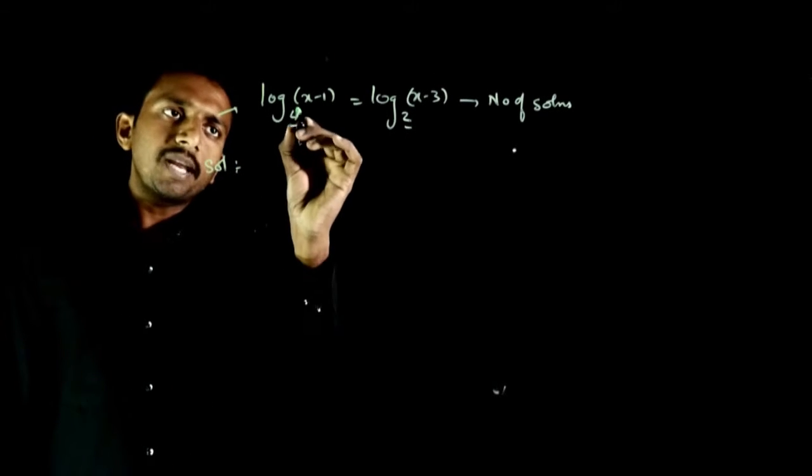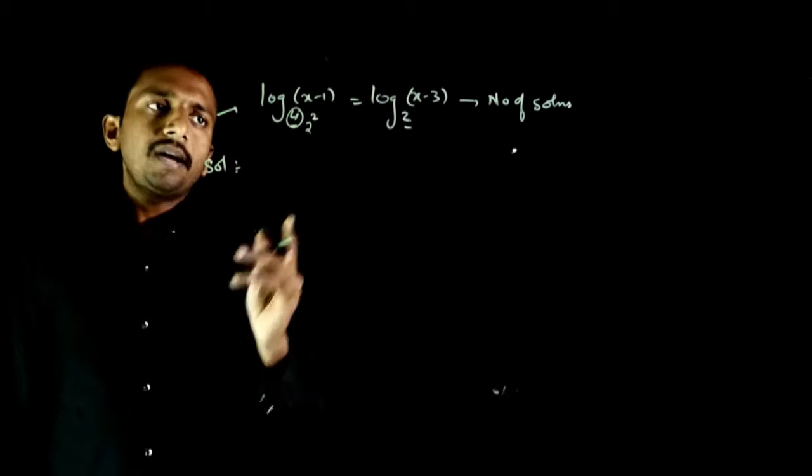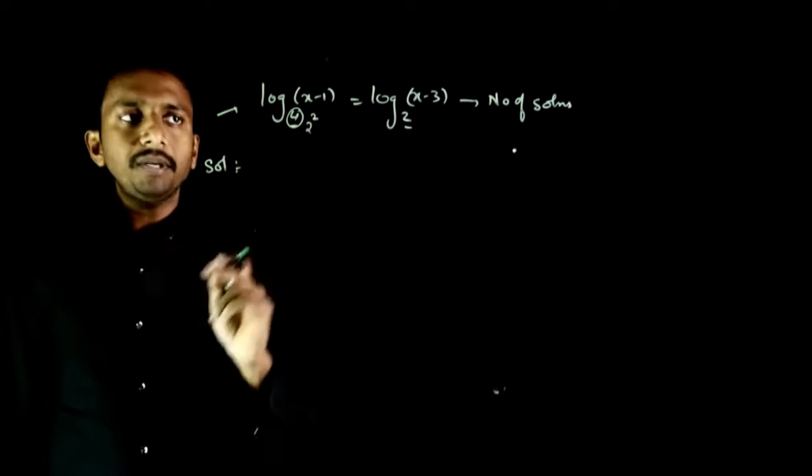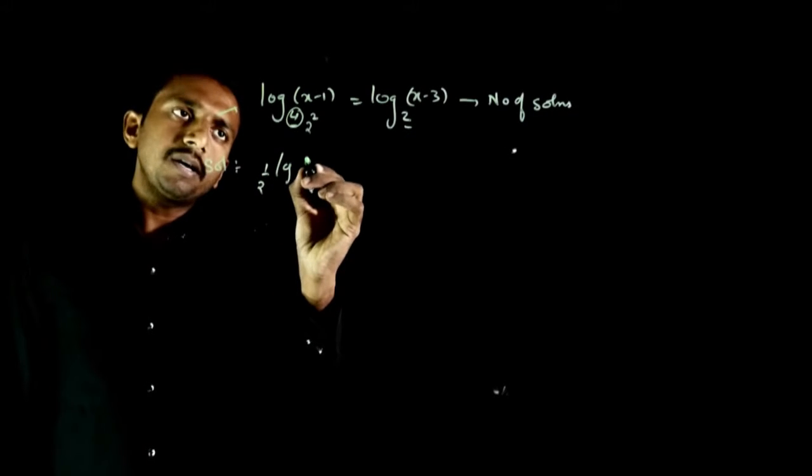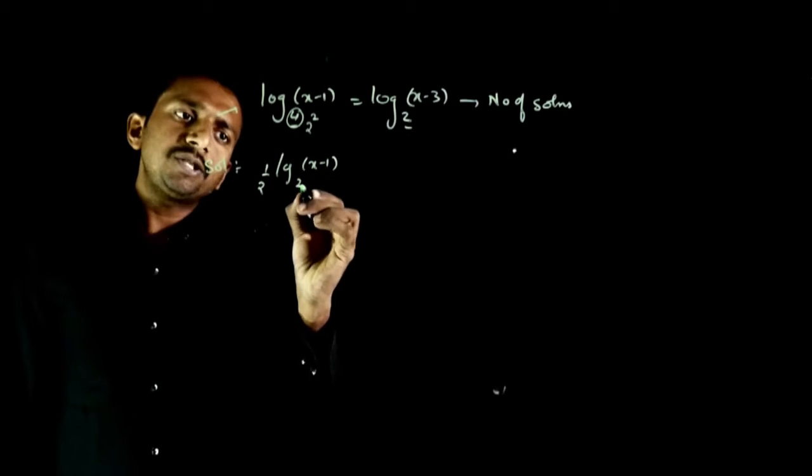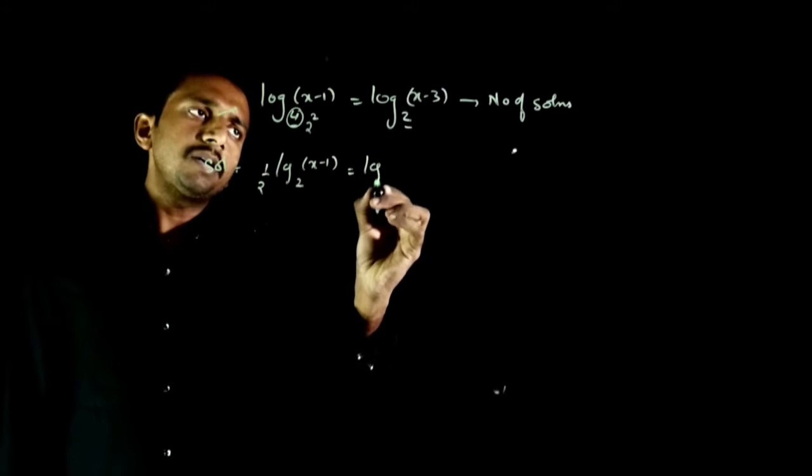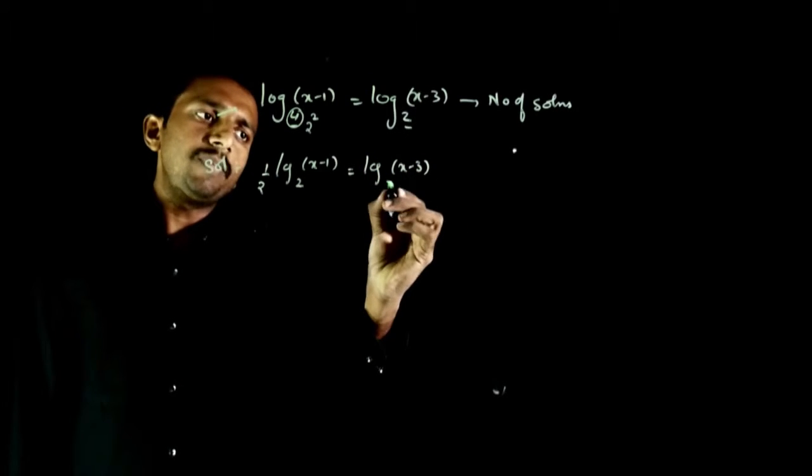4 can be written as 2 squared, and this square can be taken out as 1/2. So (1/2) log base 2 of (x-1) equals log base 2 of (x-3).